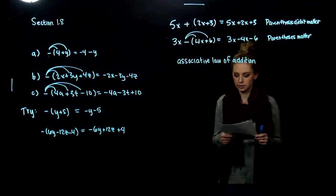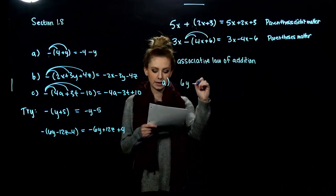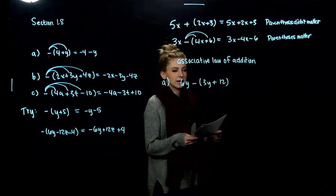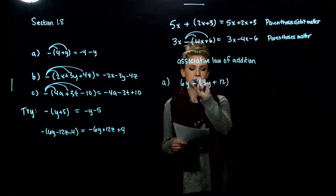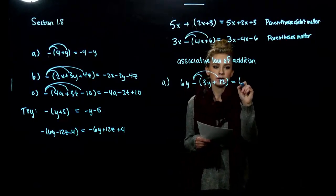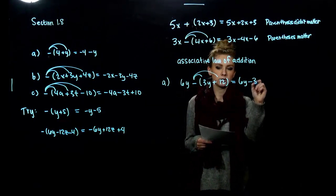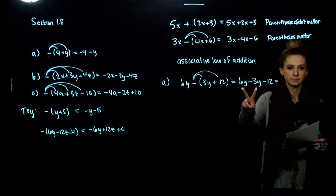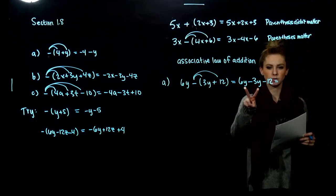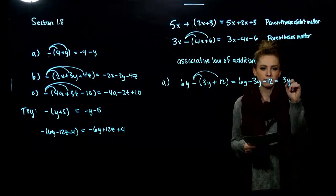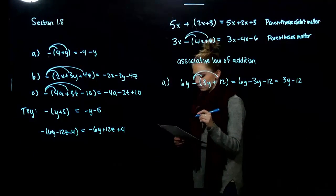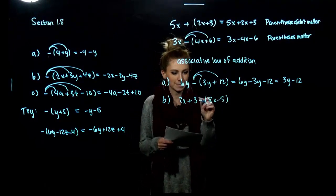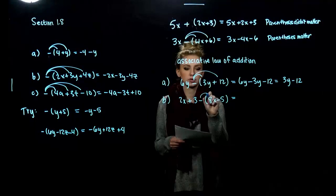Let's do a few examples. 6y minus the quantity (3y + 12). I'm going to simplify at the end by combining any like terms. First, get rid of the parentheses by distributing the negative in. So 6y doesn't change, and now I have minus 3y minus 12. I have two like terms — both in terms of y — so we can combine them: altogether, 3y minus 12. For part b, what is on the outside of the parentheses? Minus — so parentheses matter and we have to distribute to get rid of it.